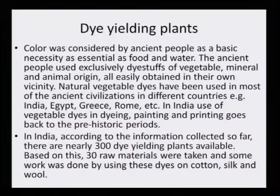In India, according to information collected so far, there are nearly 300 dye-yielding plants available. Based on this, 30 raw materials were taken and some work was done using these dyes on cotton, silk and wool. Today, in our laboratory itself, we have worked on more than 60 plants. Every day new research is happening and every time there is a new dye-yielding plant identified or screened, it is evaluated for its dyeing property on cotton, silk and wool. Some are very good with silk and wool because of their proteinaceous nature, but others are good on cellulosic fiber.